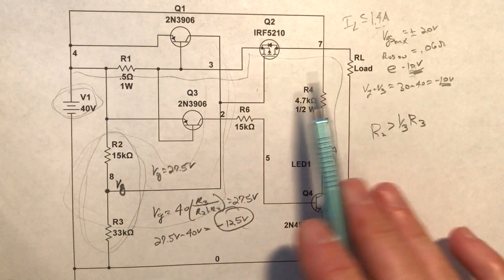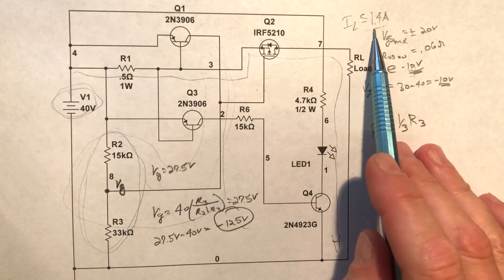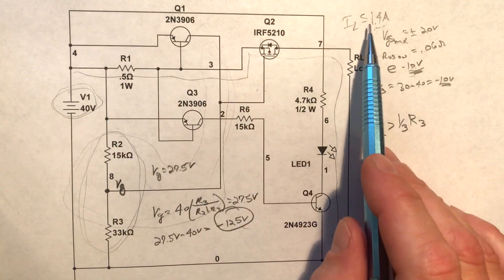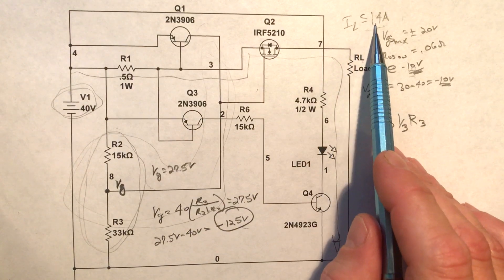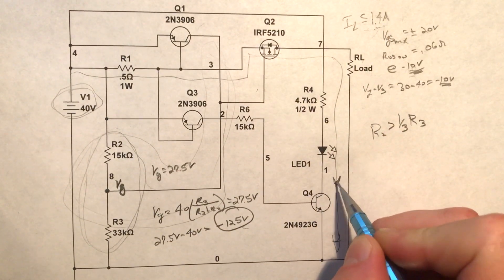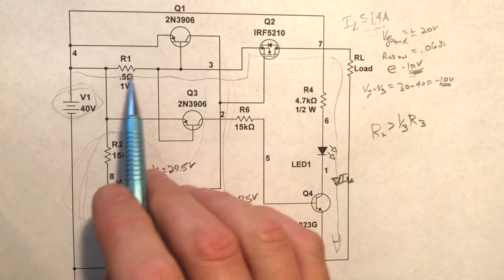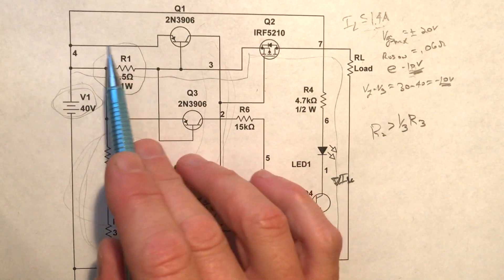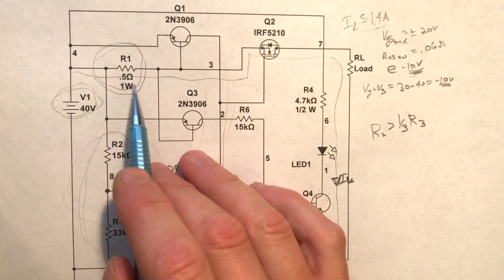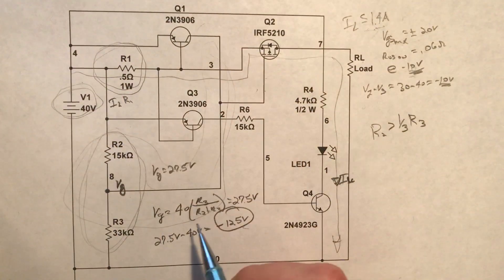All right, so that's what happens when everything's working normal with a small load and we're not anywhere near our current limit. Now what we want to look at now is as we start to approach this current limit value. So this I sub L here—I guess I should label that, this is I sub L. As I sub L comes through here, this sensing resistor is going to come into play and we know that the voltage drop here is going to be given by Ohm's law and it's just going to be I sub L times R1.